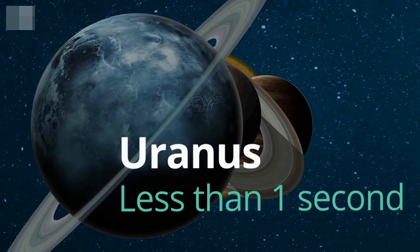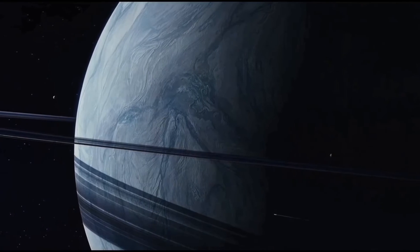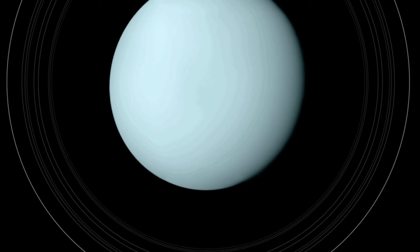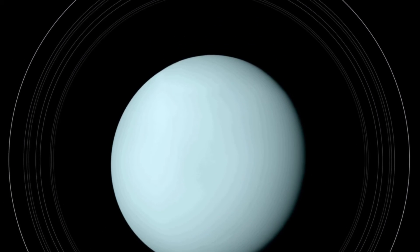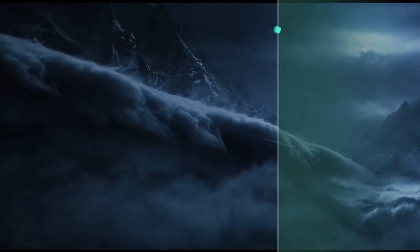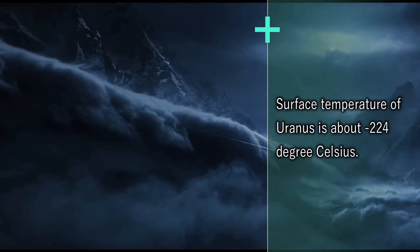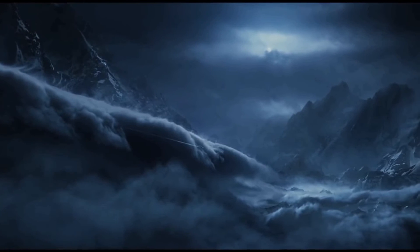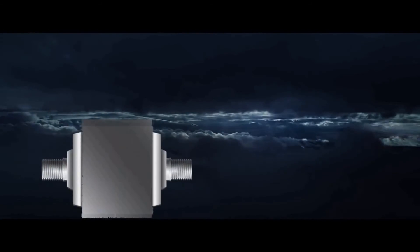Uranus: less than one second. Uranus is the seventh planet from the Sun, and it can't support life because its oxygen is very cold and plants can't grow on it. The surface temperature is about minus 224 degrees Celsius. You would survive for less than one second on Uranus and ultimately be crushed by the pressure.